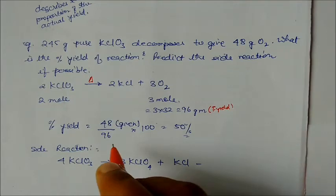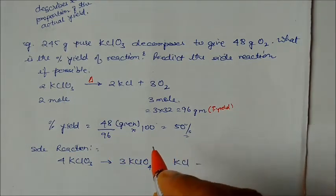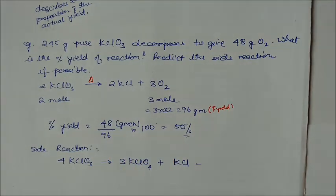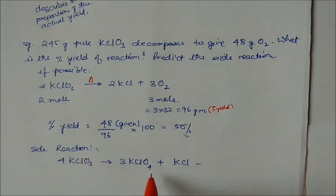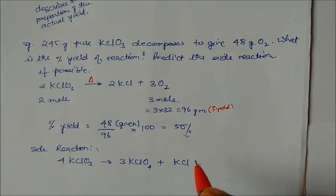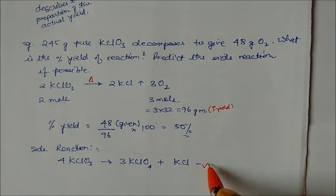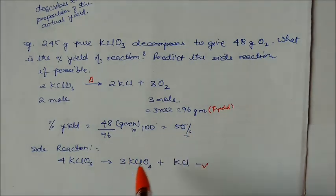Percentage yield = (48 / 96) × 100 = 50%. Since yield is only 50%, a side reaction must be occurring. The side reaction identified is: KClO₃ → KClO₄ (potassium perchlorate) + KCl, which occurs during decomposition of KClO₃. This is the example of percentage yield.